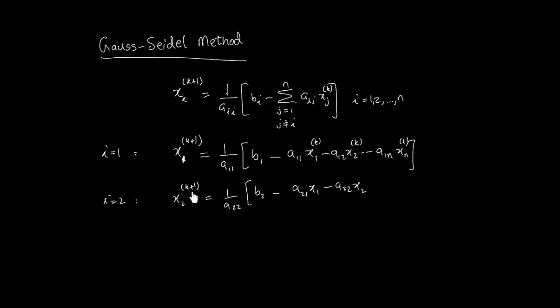But here is where it gets interesting. If you see this here, x1k, x2k, first one no problem, we use the initial guess and calculate x1 k plus 1. Now when I go to x2 k plus 1, b2, there's x1 again, but wait a minute, why should I use x1k when I already have k plus 1?